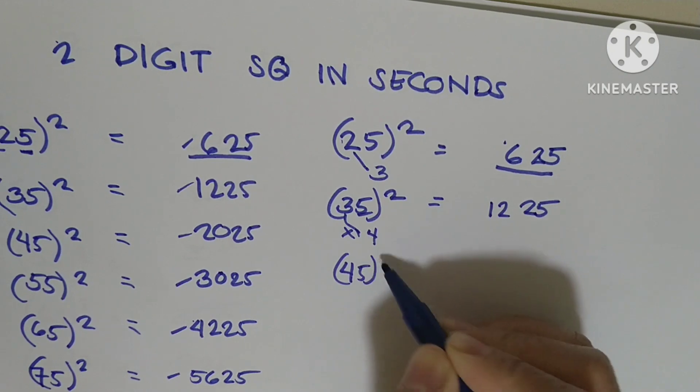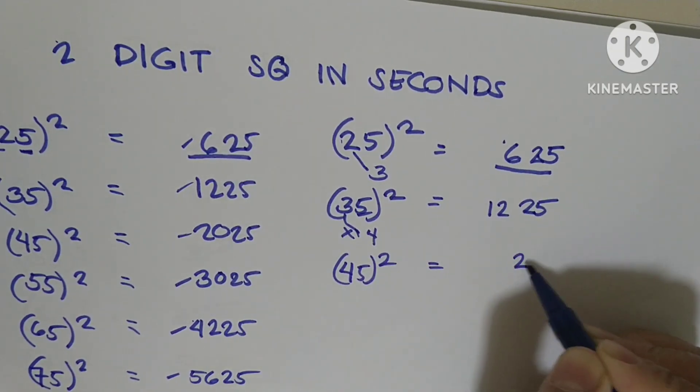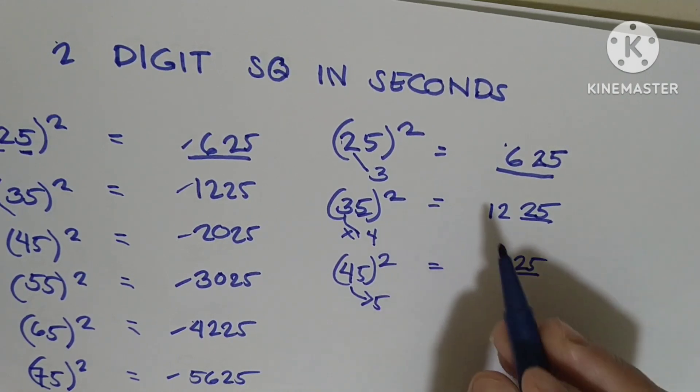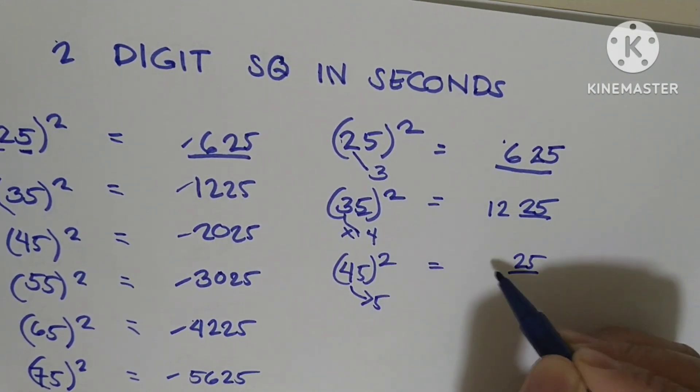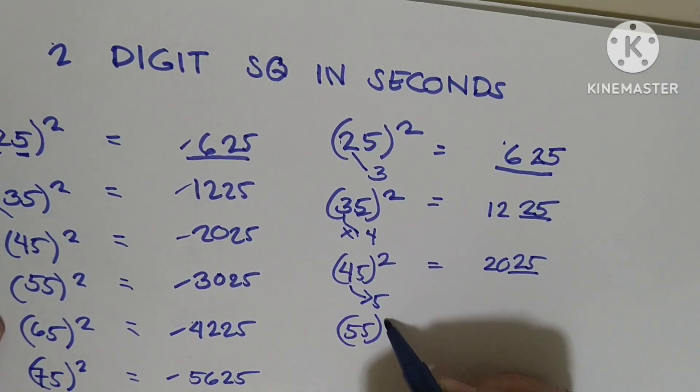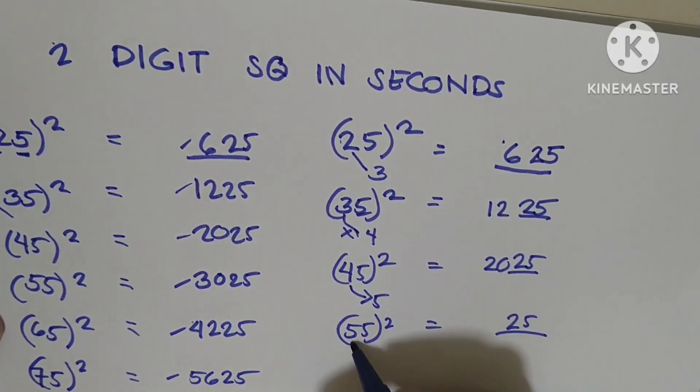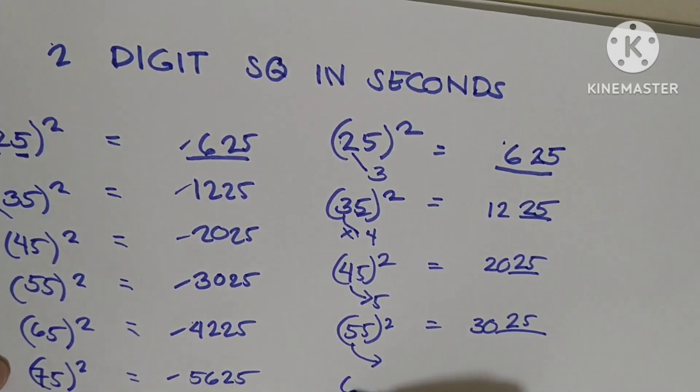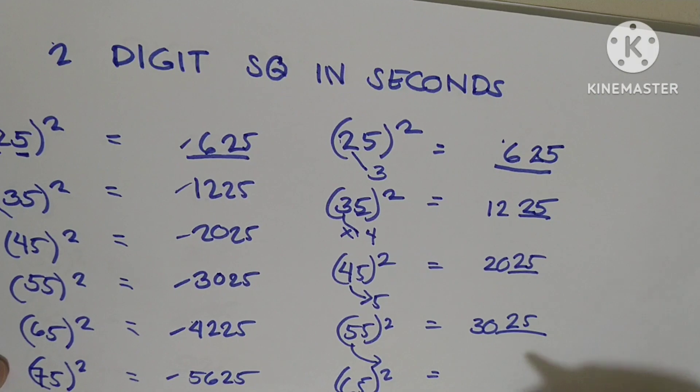And then 45: 25, and 4 times 5 because 5 is next to 4 is 20. Then 55 squared: 25, and 5 times 6 is 30. Then 65 squared: 25, and 6 times 7 because 7 is next to 6 equals 42.